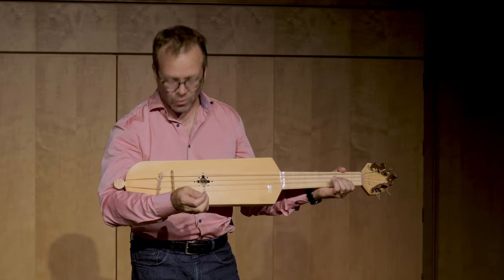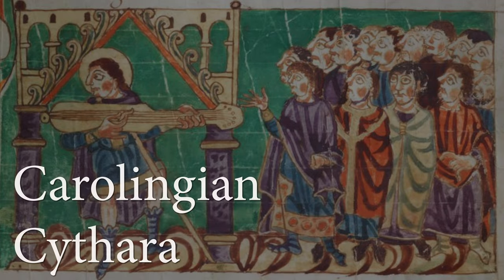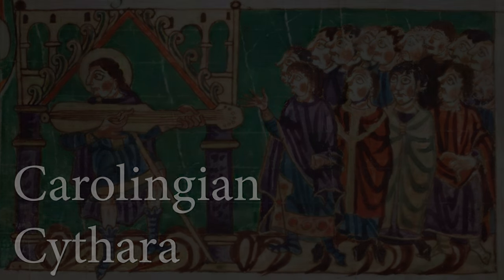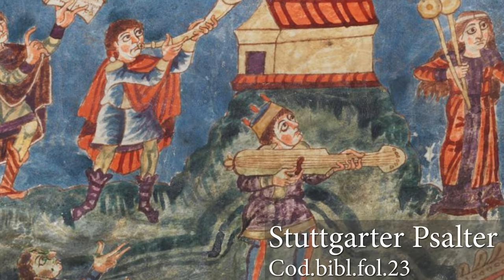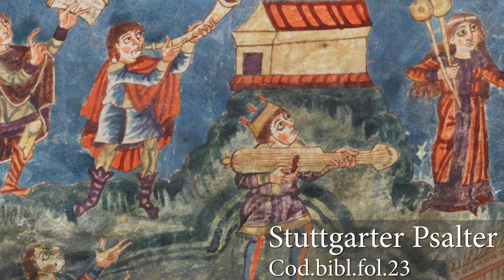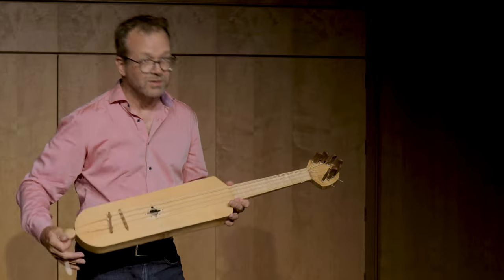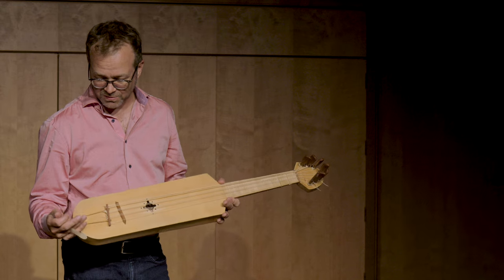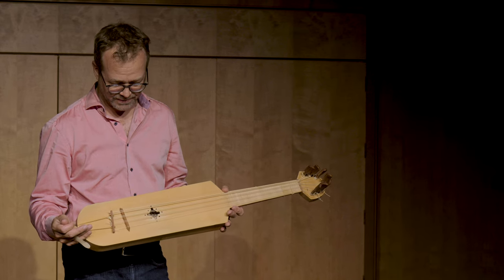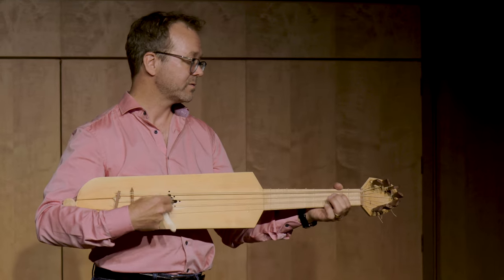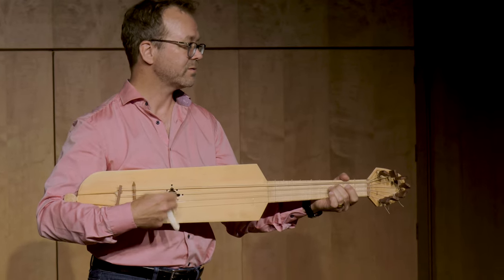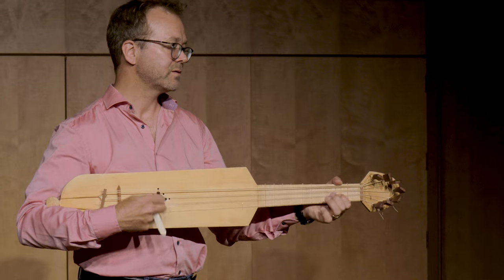This one I call a Carolingian Sithara. This is a depiction from the Stuttgart Psalter from the 9th century, following exactly the shape as we find it in the psalter.